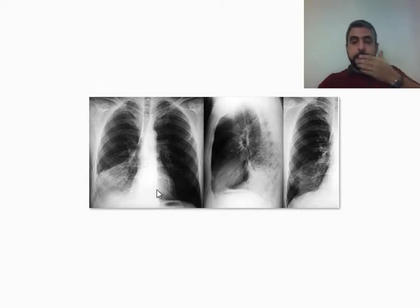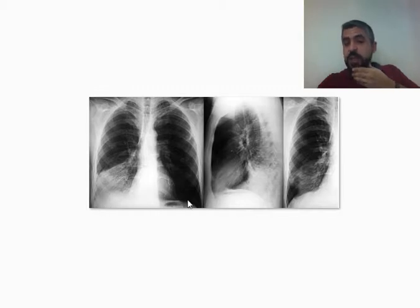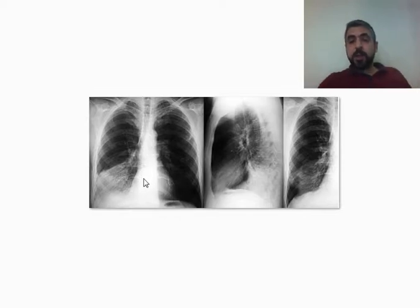Here we have another kind of consolidation. If you look carefully, you can see there is a fissure. The difference here is that the right side of the heart is quite obviously seen, while the diaphragm is not obviously seen. You cannot differentiate between the consolidated lobe and the diaphragm, but you can easily differentiate between the consolidated lobe and the right heart border. This indicates the lobe is in contact with the diaphragm — and the lobe in contact with the diaphragm but not the heart is the right lower lung lobe.